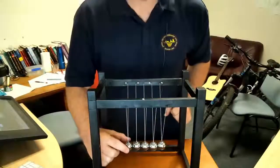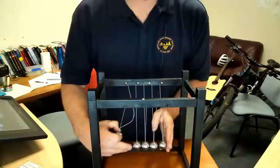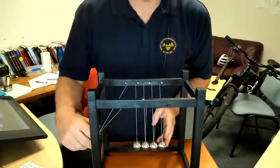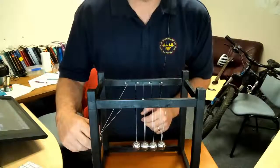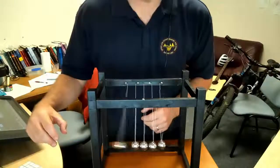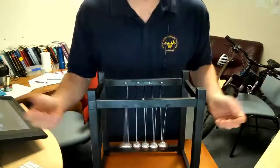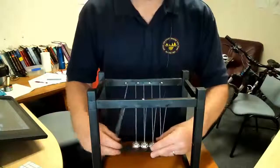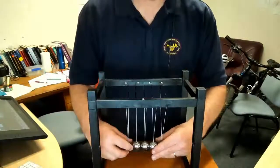This is a Newton's Cradle. When steel balls hit each other, they don't change shape afterwards and don't store energy, so the energy that goes into the collision comes back out.